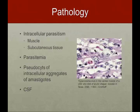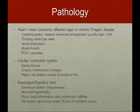Pathology: you can find the parasite itself in muscle or subcutaneous tissue, and see parasitemia in blood smear. Pseudocysts can also be seen as amastigotes, shown in the picture on the right. CSF can also show the parasite. There is a lot of dense fibrosis and chronic inflammatory changes that cause many of the clinical manifestations of chronic Chagas disease. In the esophagus and digestive tract with megadisease, you can see focal inflammation and infiltration, decreased neurons, and increased fibrosis in the plexus.